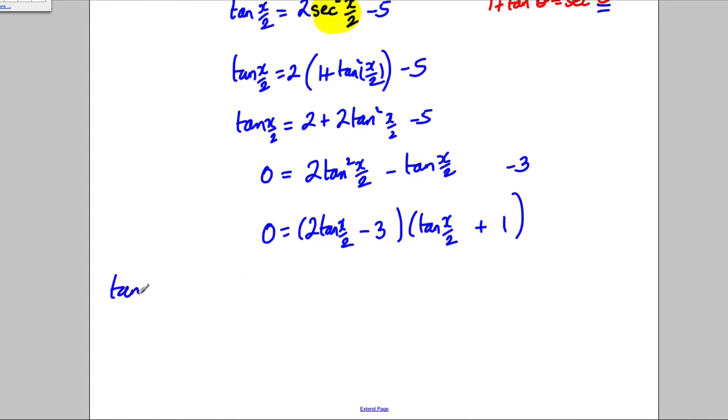So therefore, two sets of solutions, tan X over 2. 2 tan X over 2 subtract 3 is 0. So tan X over 2 is equal to 3 over 2 like that. Or tan X over 2 is equal to negative 1. So tan X over 2... Or plus 1 is 0, sorry. So tan X over 2 is equal to negative 1.